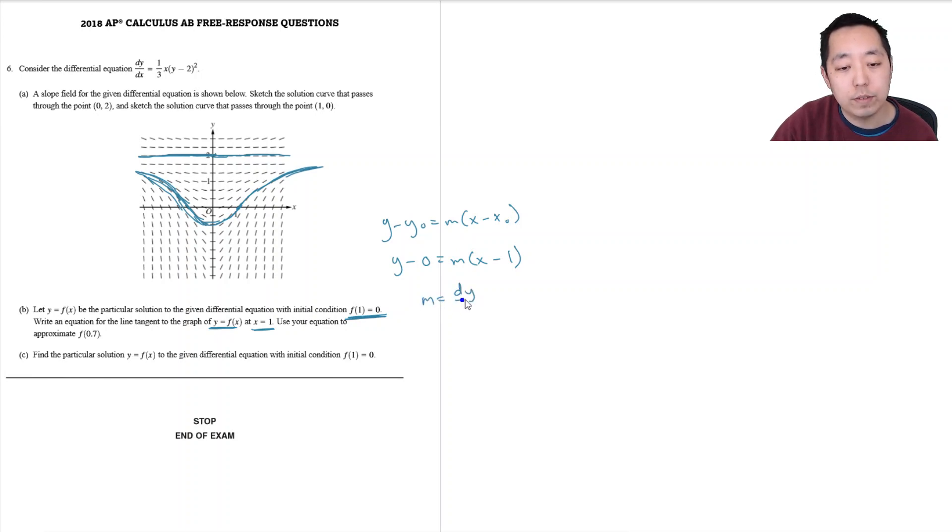m is the derivative dy dx evaluated at the point x equals one. So in this case our derivative is one third x times y minus two squared. I can plug in x equals one but I also know the y value is zero because the point goes through one zero. So this is one third times one times zero minus two squared. This negative two squared is four, so this is four thirds.